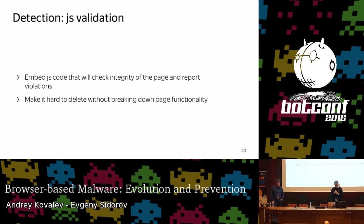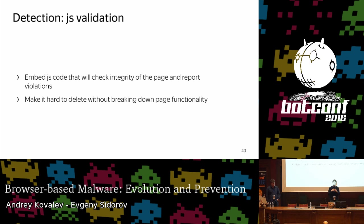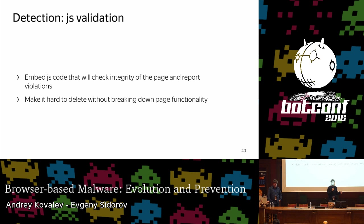To detect such cases, you can use the so-called inverse CSP approach. You add a script to your web page that intentionally violates your own content security policy, and you expect a report from the user's browser. If you don't get this report, then something is wrong — something removed or modified the reporting URI. The third approach is JS validation: the same idea as CSP, but you implement it yourself in JavaScript and embed special JS code in your web page that tracks whether your page was modified or its elements were changed by external scripts, then sends reports to your web server. It's not a default browser feature — you need to implement it yourself in JS — but it's not hard to implement, and you can make it difficult for malicious extensions to remove.